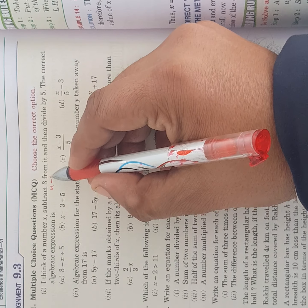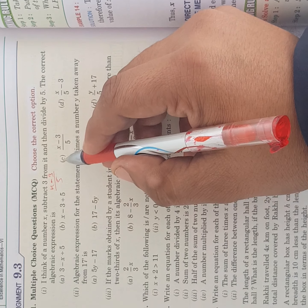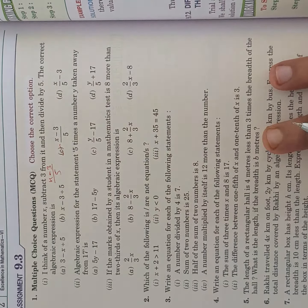Subtract 3 from it, 3 is minus, and then it is divided by 5. So this is the question, it means x minus 3 upon 5 is the answer.